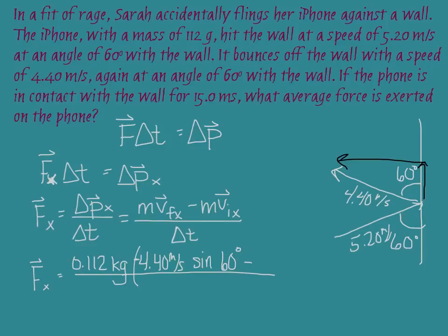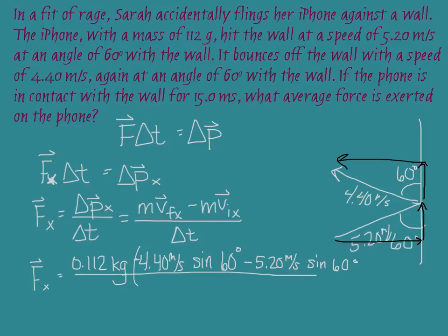I divide all of that by the time. The problem gives the time in milliseconds — 15 milliseconds — which converts to 0.015 seconds. Plugging all of that into the calculator, making sure the calculator is in degree mode, I end up getting an x-component of force equal to negative 62.1 Newtons. The negative sign makes sense because this force has a leftward component to it.